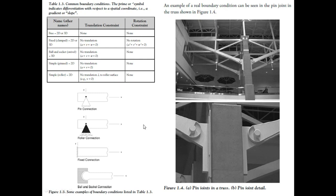Here are real pictures of structures showing pin connections, roller connections with small wheels, fixed connections, and ball and socket joints. An example of real boundary conditions can be seen in the pin joints in the truss shown, which is a three-dimensional triangular truss structure constrained by columns with pin joints. Figures A and B show the details.